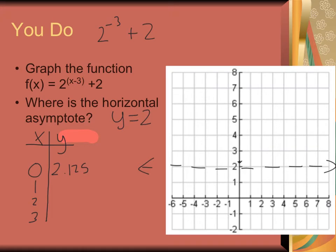Then if I plug in 1, I'm going to have 2 to the negative 2nd plus 2. Well, 2 to the negative 2nd is basically, 2 to the 2nd is 4, so it's 1 over 4. So we get 2 and a 4th, or 2.25. And then if I plug in 2, I'm going to have 2 to the negative 1st plus 2. So that's like 1 half plus 2, so 2.5.